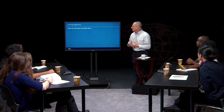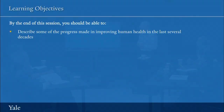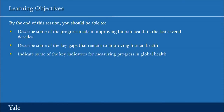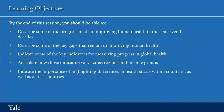When you finish this session, you should be able to describe some of the progress made in improving human health in the last several decades, describe some of the key gaps that remain in improving human health, indicate some of the key indicators for measuring progress in global health, articulate how those indicators vary across countries and income groups, and indicate the importance of highlighting differences in health status not only across countries but within countries as well.